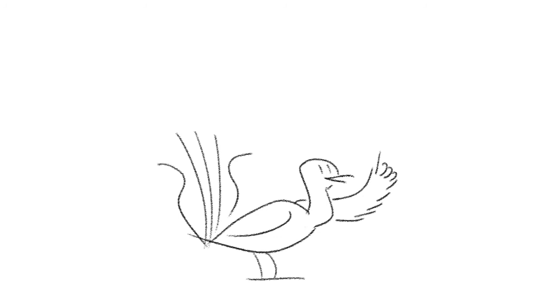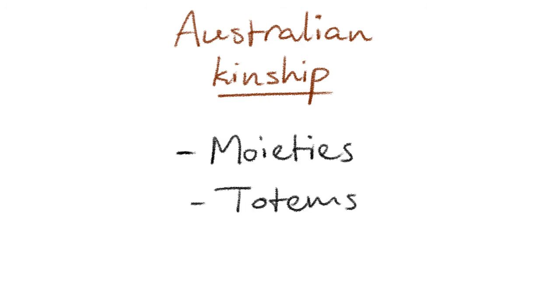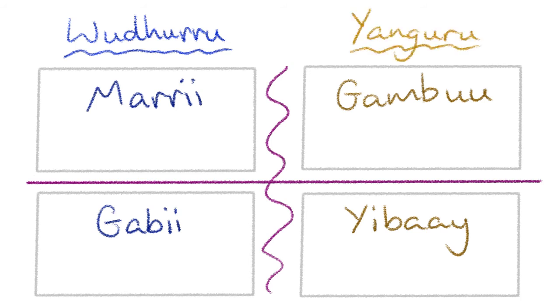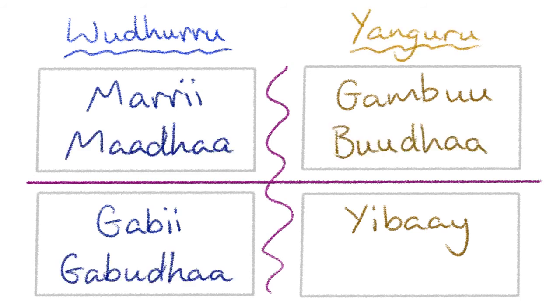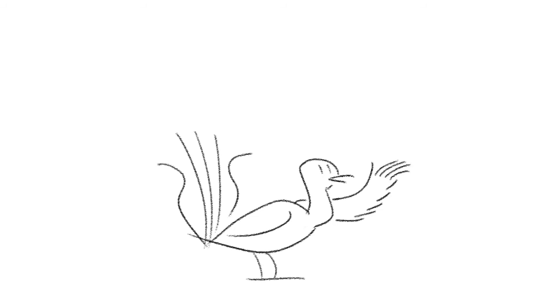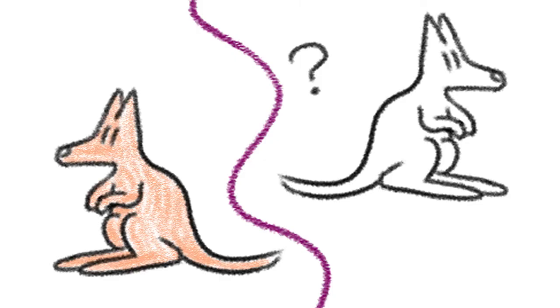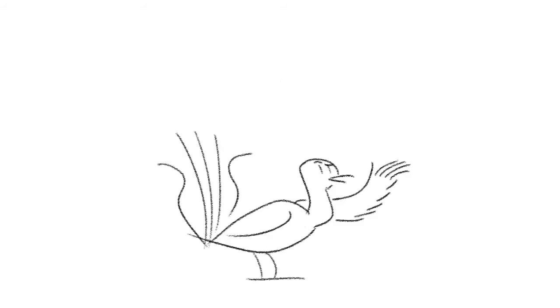Kinship. Because Gamilarai is part of an Australian nation, the Gamilarai people have an Australian kinship system, including moieties, totems, and of course skin names — or as I like to call them, incest repellent. Gamilarai has four skin names or sections: Mari and Gabi belong to the moiety Wuduru, and Gambu and Ibai belong to Yanguru. There are also female forms of each name: Madha, Budha, Gabuda, and Ibada. Unfortunately, due to colonialist history, we don't know everything about which totem belonged to which moiety prior to invasion. What is known is that the Wallaby, Duck, Goanna, Kookaburra, Possum, Red Snake, Carpet Snake, and Kangaroo belong to the Wuduru moiety, and the Galah, Emu, Frog, and a different Kangaroo belong to the Yanguru moiety.